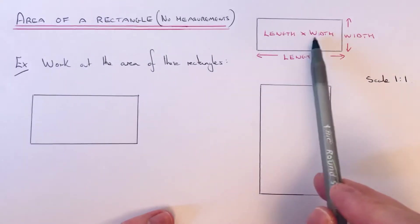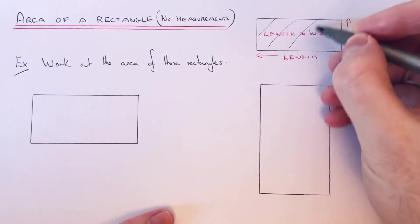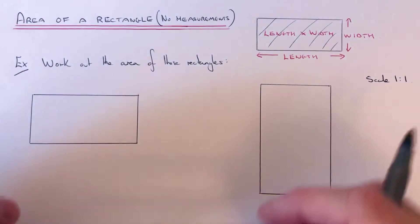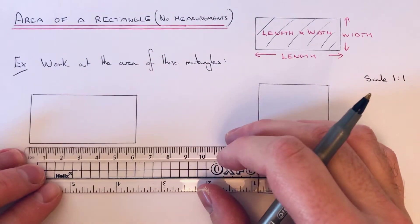So once you've done this, you just need to multiply the length and width together to give you the area of the rectangle. So let's have a look at the first one. If you get your ruler, I'm going to measure the lengths in centimeters.